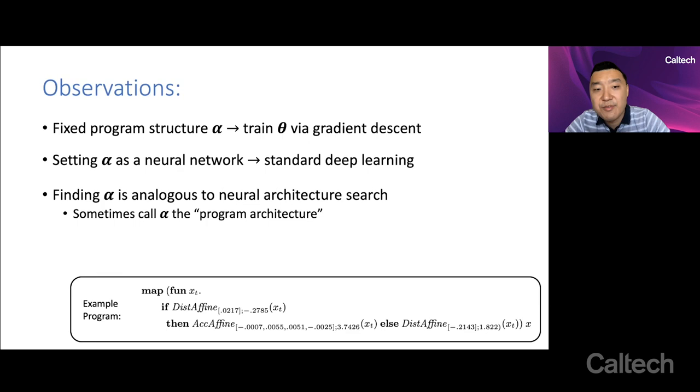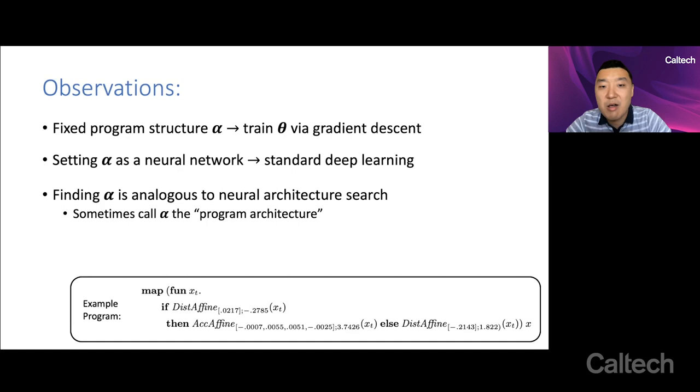Finding the structure alpha is analogous to neural architecture search, if you're familiar with that area. And so we sometimes call alpha the program architecture. Classic program synthesis focuses mainly on finding this alpha with the continuous parameters in the library being typically very simple or non-existent. And so this is the sense in which neural symbolic programming really tries to inherit both the structure and the semantics of both deep learning and symbolic program synthesis.